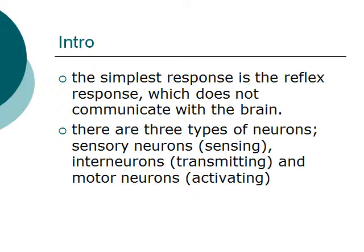The second type is interneurons, for transmitting signals from one type of neuron to another. The last one is motor neurons, which are for activating muscles.